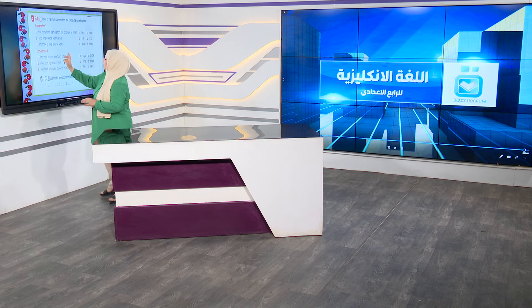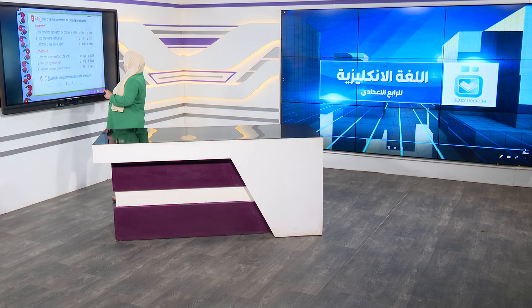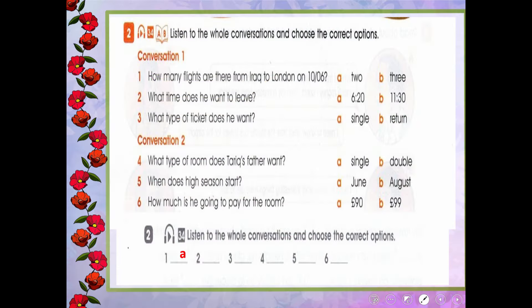The answers are: Number 1 — A, Number 2 — B, Number 3 — B. What type of room does Tariq's father want? Answer: B — double. When does high season start? Answer: A — in June. How much is he going to pay for the room? Answer: B — 99 pounds.